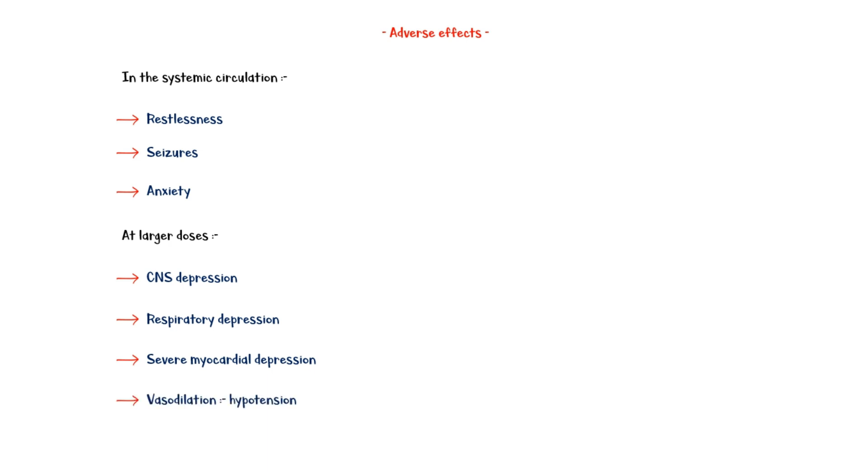Finally, both types of medications share similar side effects. In the systemic circulation, initially they can cause restlessness, seizures, and anxiety. At larger doses, they can cause central nervous system depression, respiratory depression, and severe myocardial depression. Except cocaine, local anesthetics usually cause vasodilation, which leads to hypotension and further aggravation of myocardial depression.